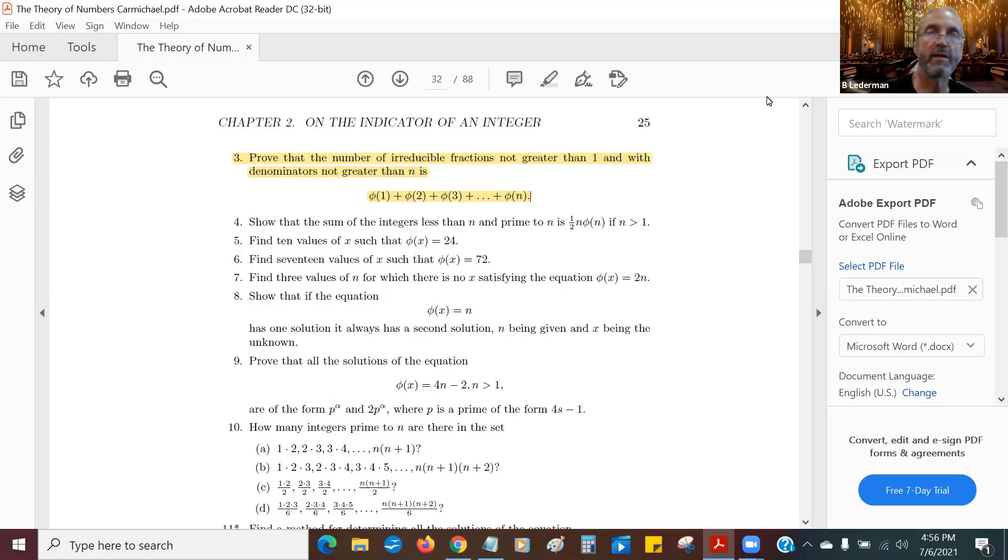Hi everybody, we got a request to do exercise number three in section 2.4: prove that the number of irreducible fractions not greater than one with denominators not greater than n is φ(1) + φ(2) + φ(3) + ... + φ(n).